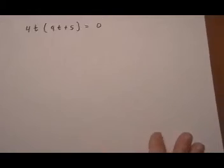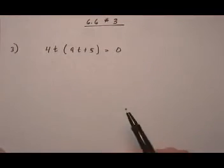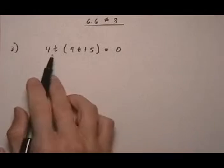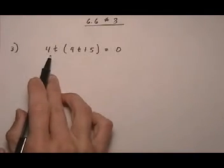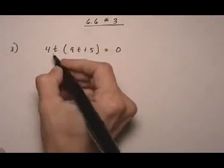And let's try one more, number 3. Here we still have two factors equaling 0. So we're going to be able to use the zero factor theorem. The only difference is that one of the factors is a monomial, and the other one's a binomial. But that doesn't change what we're going to apply at all.